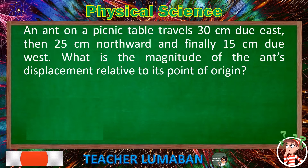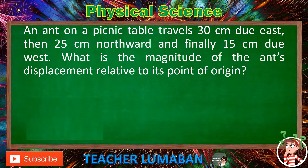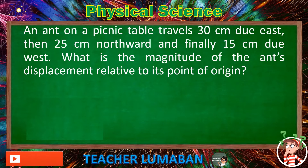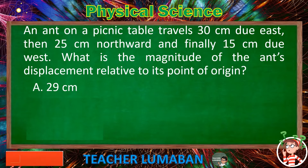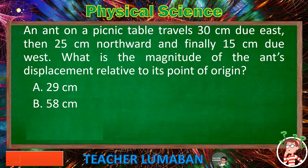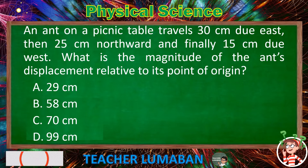An ant on a picnic table travels 30 cm due east, then 25 cm northward, and finally 15 cm due west. What is the magnitude of the ant's displacement relative to its point of origin? Letter A: 29 cm. Letter B: 58 cm. Letter C: 70 cm. Letter D: 99 cm.